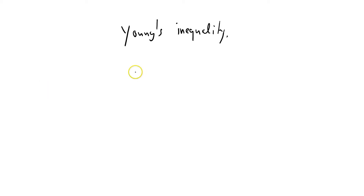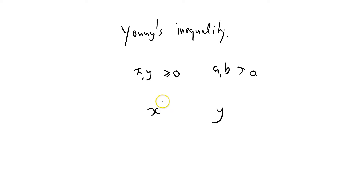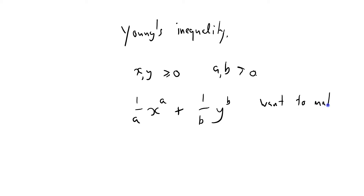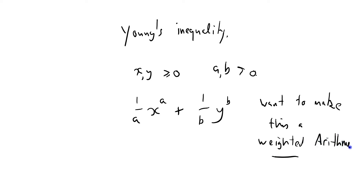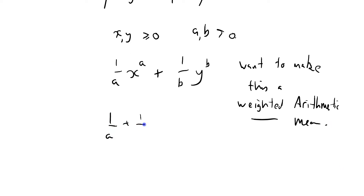I'm going to consider X and Y which are positive, and I'm going to consider numbers A and B which are positive as well — strictly positive. And I'm going to consider X to the power A and Y to the power B. I want to make this a weighted arithmetic mean. In order to make it weighted, I need to say that 1 over A plus 1 over B equals 1.